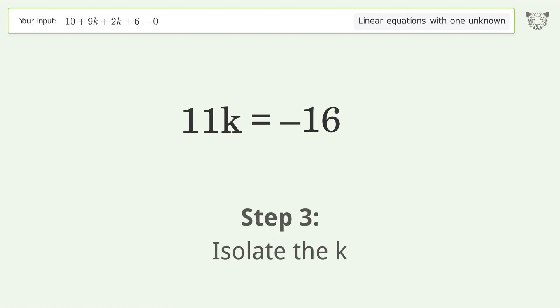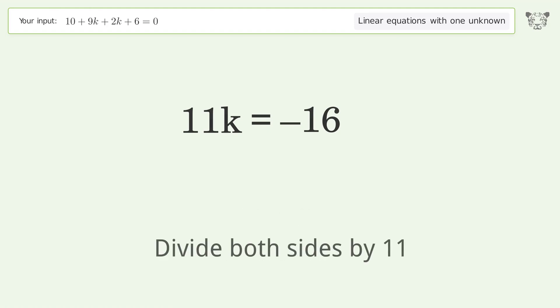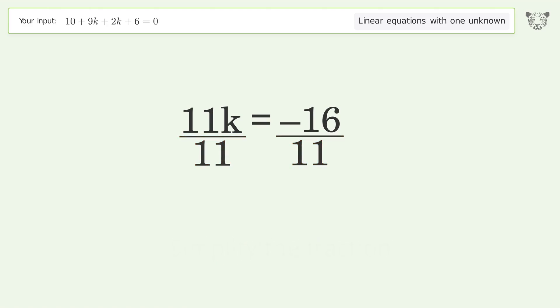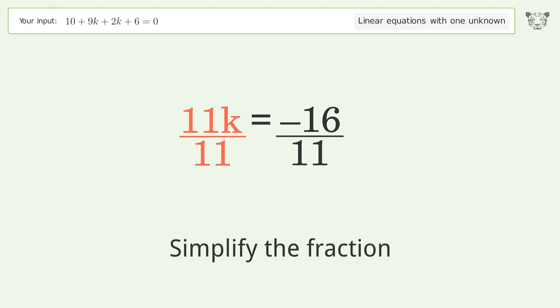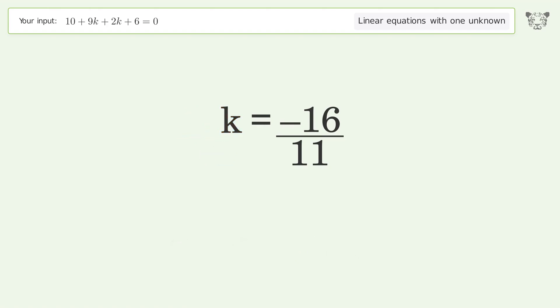Isolate k by dividing both sides by 11. Simplify the fraction, and so the final result is k equals negative 16 over 11.